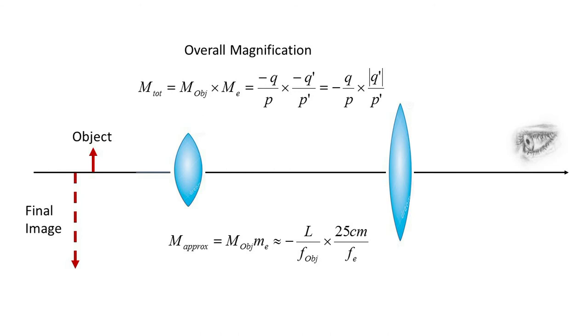The overall magnification of the compound microscope will be the product of the magnifications of each stage. The more precise magnification will depend on q, p, q prime, and p prime as determined by applying the simple lens formula twice through the two stages.